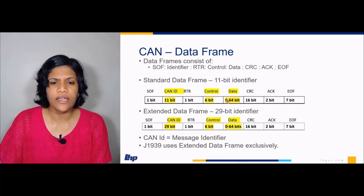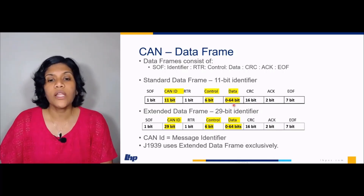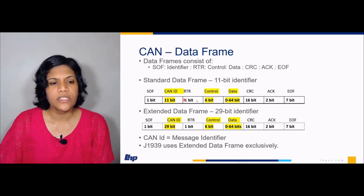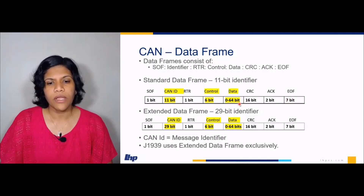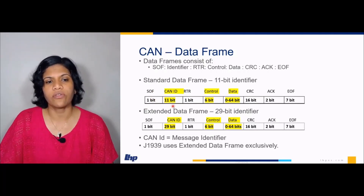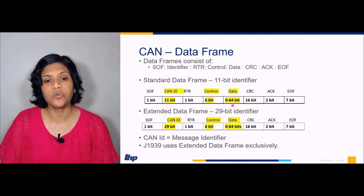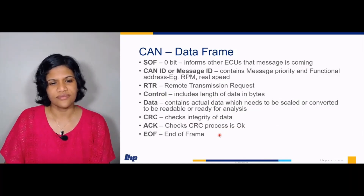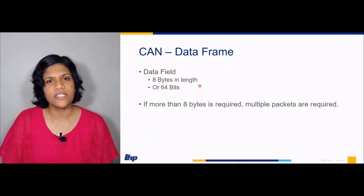The control field contains the size of the data. For example, if 12 bytes of data need to be transmitted, but only 8 bytes can be sent in a single packet, then 8 bytes will be transmitted as one packet and the remaining 4 bytes as the next packet, each with all the header information like SOF, CAN ID, RTR, and so on attached. So 12 bytes of data can be transmitted as two packets.